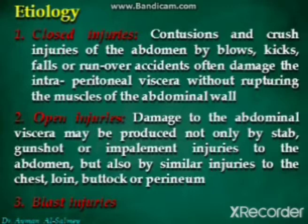Run-over accidents often damage the intra-peritoneal viscera without rupturing the muscles of the abdominal wall. In open injuries, damage to the abdominal viscera may be produced not only by stab, gunshot, or impalement injuries to the abdomen, but also by similar injuries to the chest, loin, buttock, or perineum, so abdominal injuries may be an extension of injuries to these areas.